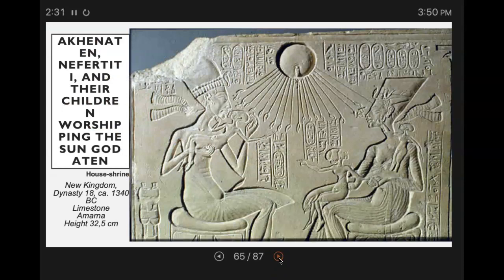Akhenaten abandoned the Egyptian pantheon of gods. He's the one that established that monotheistic religion that worshiped the sun disc god Aten and declared himself to be the wonder at connection between humans and Aten. He also changed the artistic style to show realism, like a sunken chest, a pot belly, and thin arms and legs. He ruled for 17 years with his wife, the famous and beautiful Nefertiti. At his death, Egypt returned to polytheism.